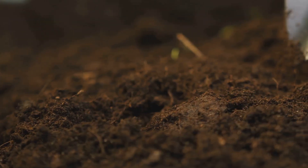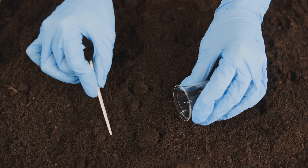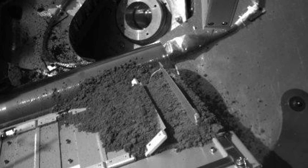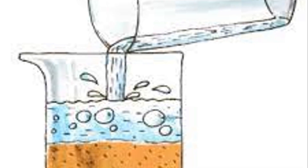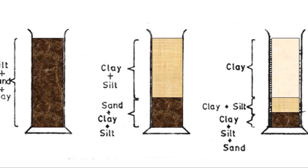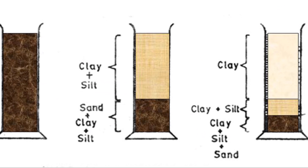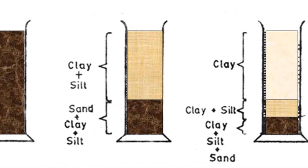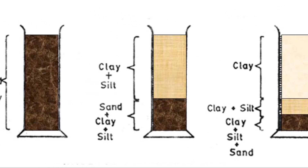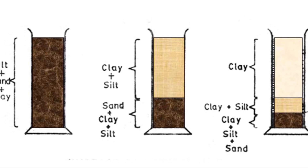To determine the constituents of soil, we can perform a simple experiment. First, we collect a soil sample and dry it out completely. Then we grind the soil into a fine powder. This powder is then mixed with water in a transparent container and left to settle. After some time, the soil particles separate into distinct layers: sand at the bottom, silt in the middle, and clay at the top. The thickness of each layer tells us the proportion of each constituent in the soil.